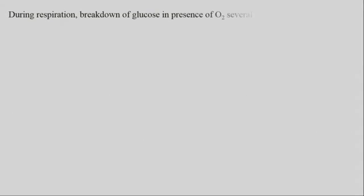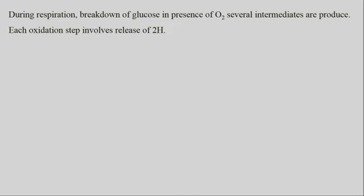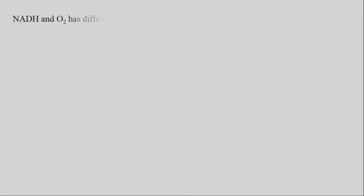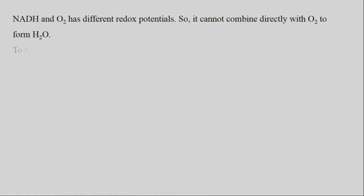During respiration, breakdown of glucose in presence of oxygen produces several intermediates. Each oxidation step involves two molecules of hydrogen which are taken by NAD+ or FAD to form NADH2 or FADH2, which will finally reduce oxygen to water. NADH and O2 have different redox potentials, so they cannot combine directly with oxygen to form water.